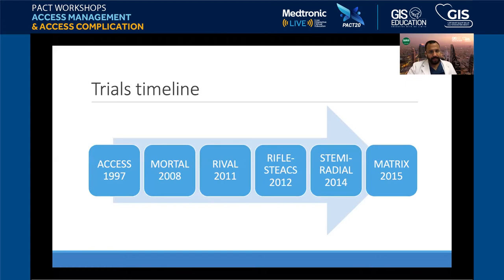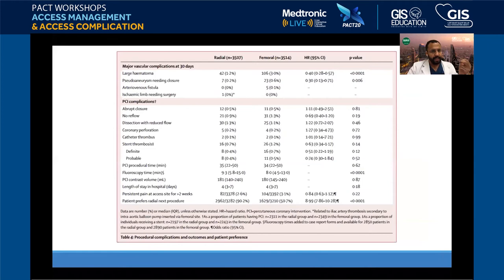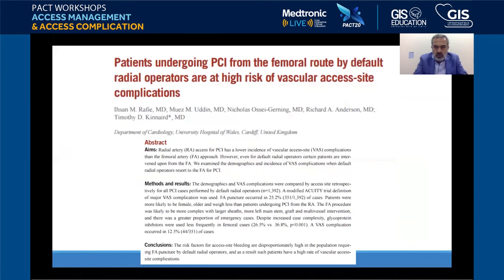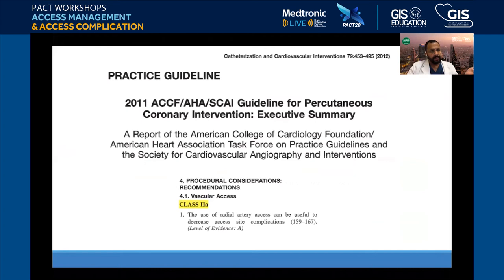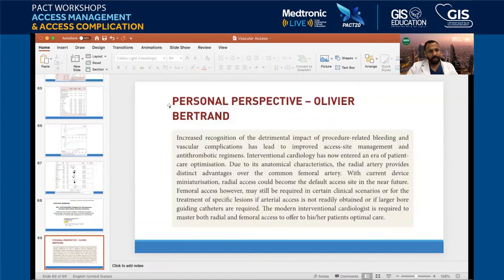Radial versus femoral: radial wins in terms of patient comfort, outcome, and prevention of mortality — and it's made it to the guidelines. The Americans, slightly hesitant to change guidelines, classify it as 2A as a default access for intervention. The European guidelines give it a Class 1 evidence A recommendation: radial should be your default access. By this I end my talk and welcome any questions, or we can proceed to Mohamed's post-care talk and take questions at the end.